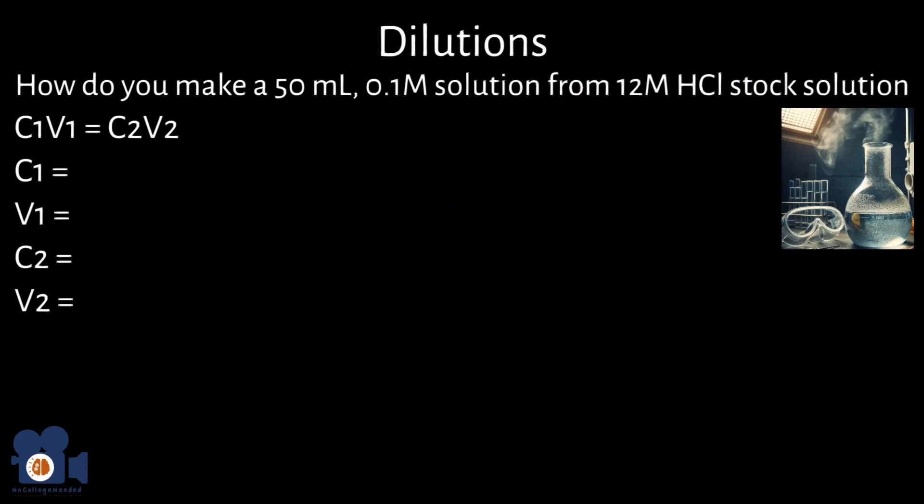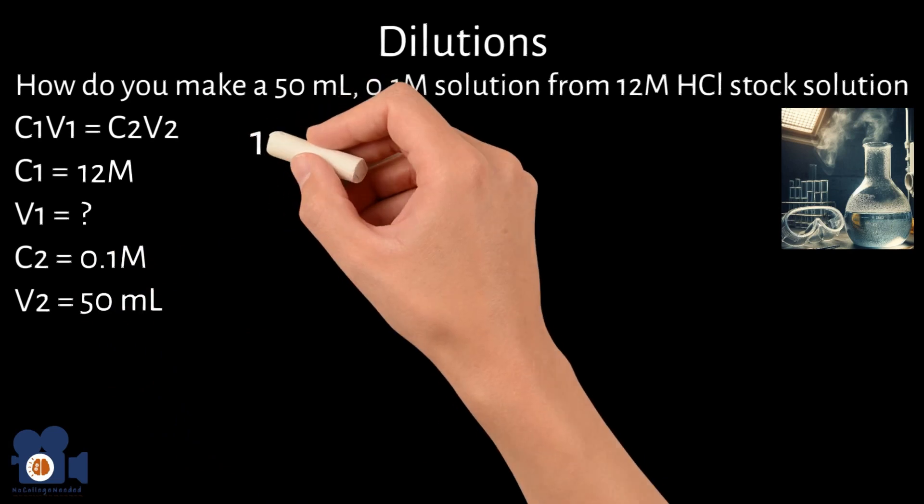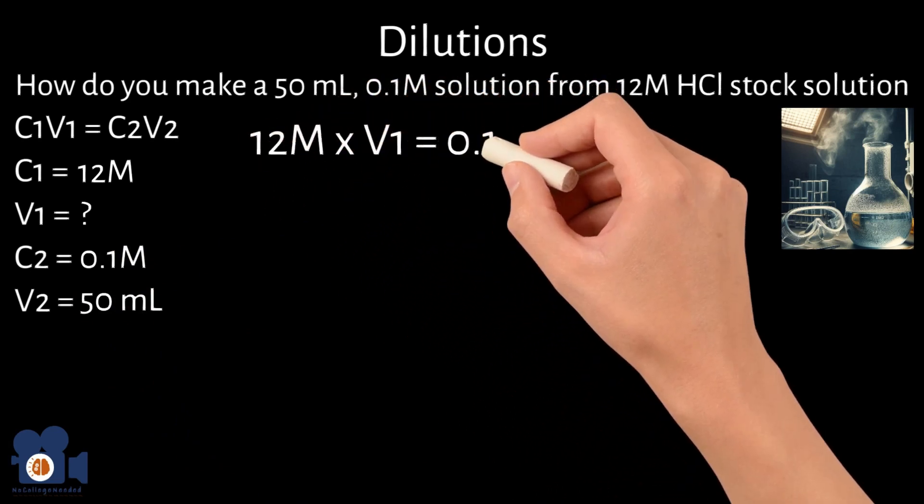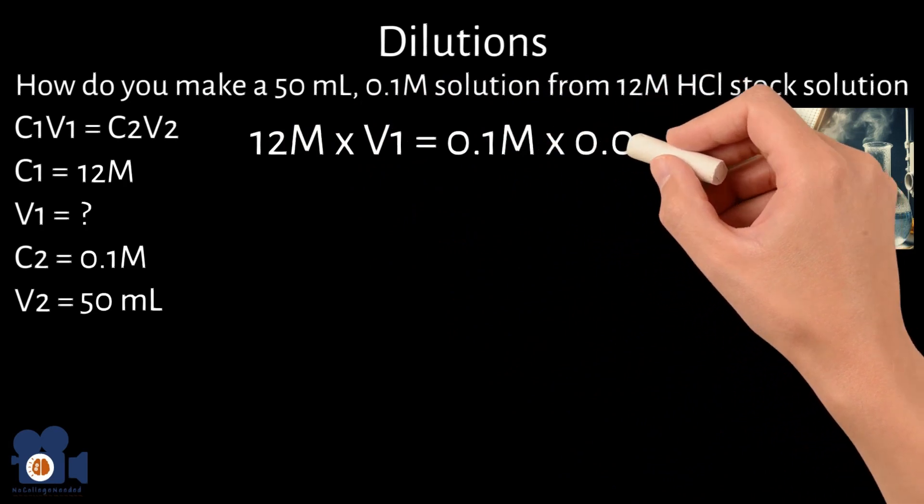In our example, C1 is 12 molar, V1 is unknown at the moment, C2 is 0.1 molar, and V2 is 50 milliliters.